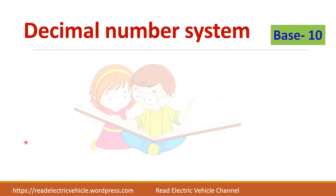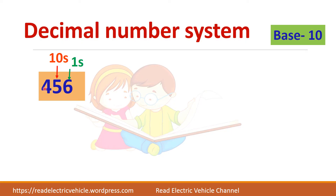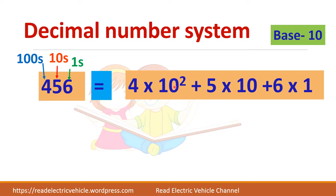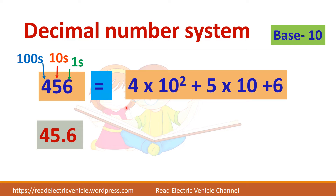Let us take another example: 456. It is a three-digit number. The 6 is in the 1's position, 5 in the 10's position, and 4 is in the 100's position, because the positions move as powers of 10. So 10 power 0 equals 1, 10 power 1 equals 10, and 10 power 2 equals 100. So 456 can be written as 4 into 100 plus 5 into 10 plus 6 into 1, which gives 456.